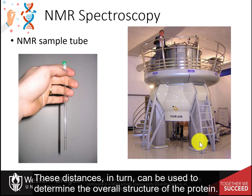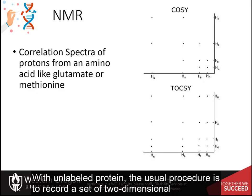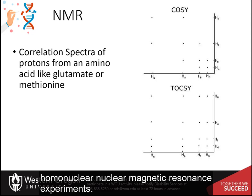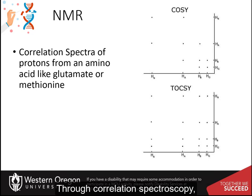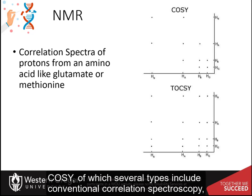Furthermore, the absorption signals of different nuclei may be perturbed by adjacent nuclei. This information can be used to determine the distance between nuclei. These distances, in turn, can be used to determine the overall structure of the protein. With unlabeled protein, the usual procedure is to record a set of two-dimensional homonuclear NMR experiments through correlation spectroscopy, COSY, of which several types include conventional correlation spectroscopy.